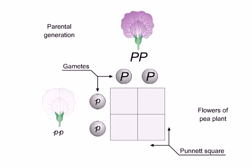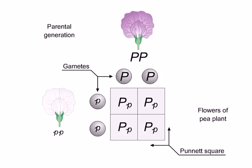Each parent produces a single type of gamete. The genotype of each gamete produced by one parent, shown on the top, is brought down into each of the squares below it. Likewise, the genotype of each gamete produced by the other parent, shown on the left, is moved into each square to the right. The Punnett square helps us predict the genotypes of the offspring. Using the information provided, predict the phenotypes of the offspring and drag the correct phenotypes to each square in the grid.